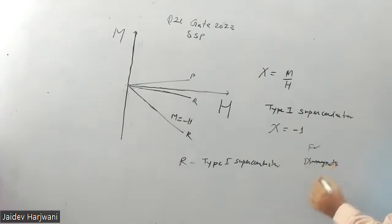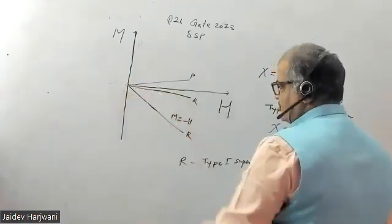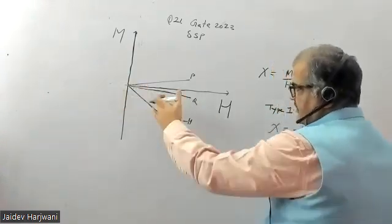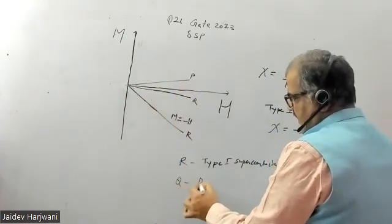For diamagnetic, chi is less than zero but its value is very small. So this Q, this is a very small slope, very less than one. This Q corresponds to diamagnetic material.